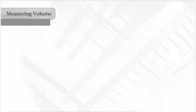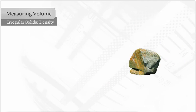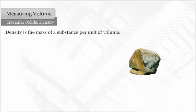Typically, the reason to measure the volume of an irregular solid is to determine the density of the solid. Density is the mass of a substance per unit of volume. The formula for density is mass divided by volume.